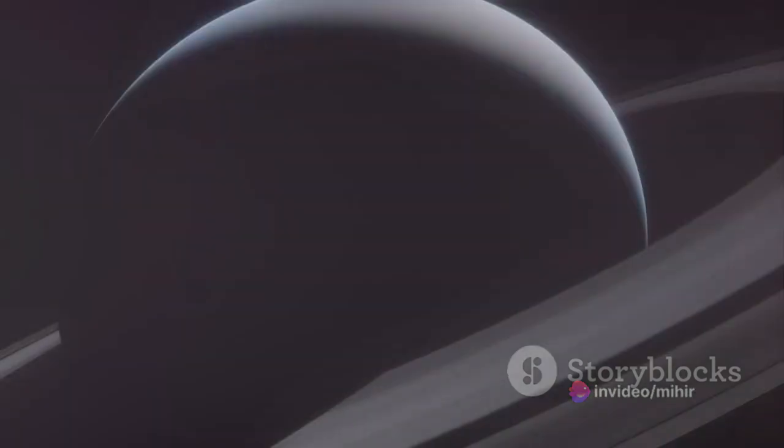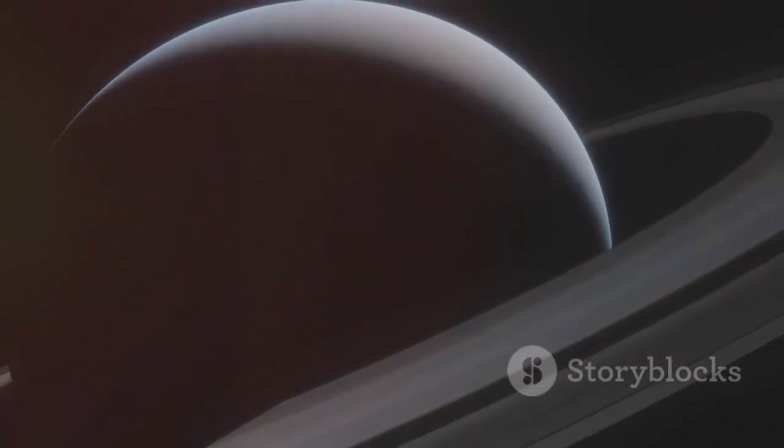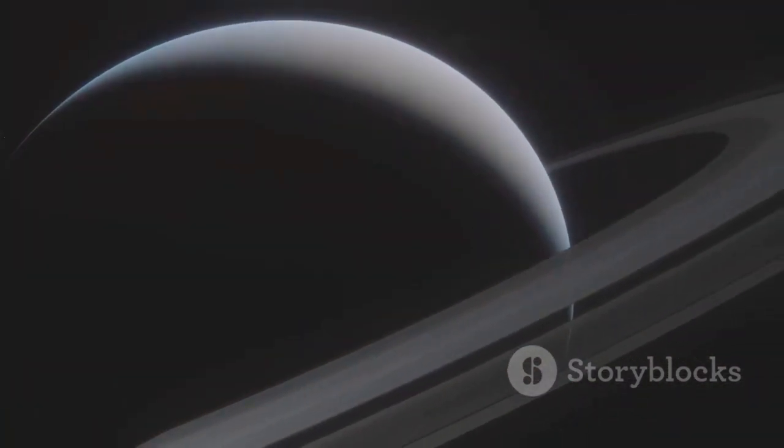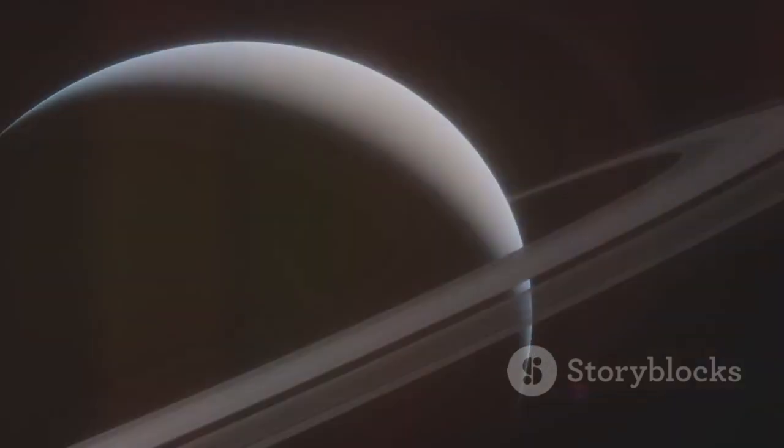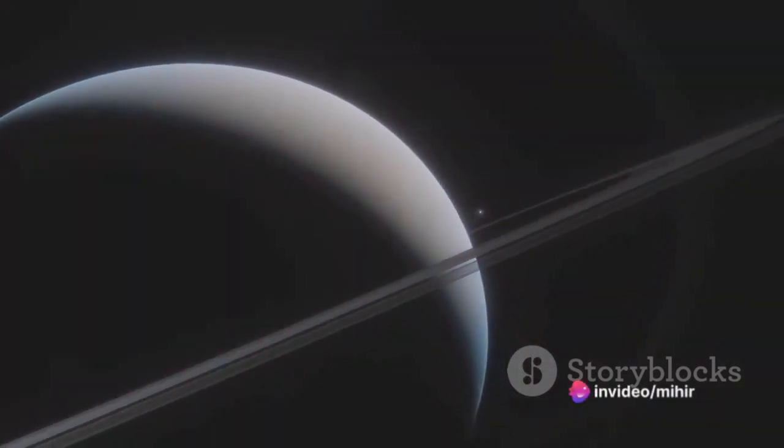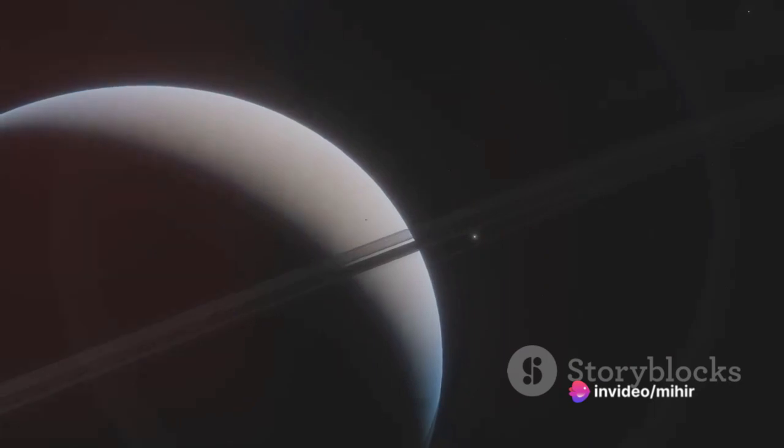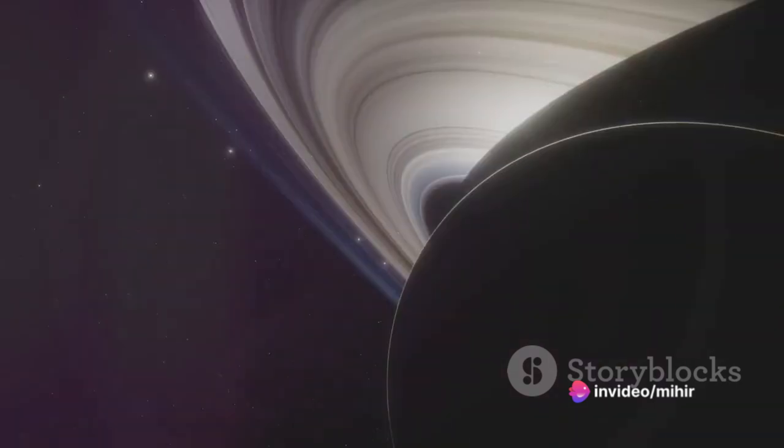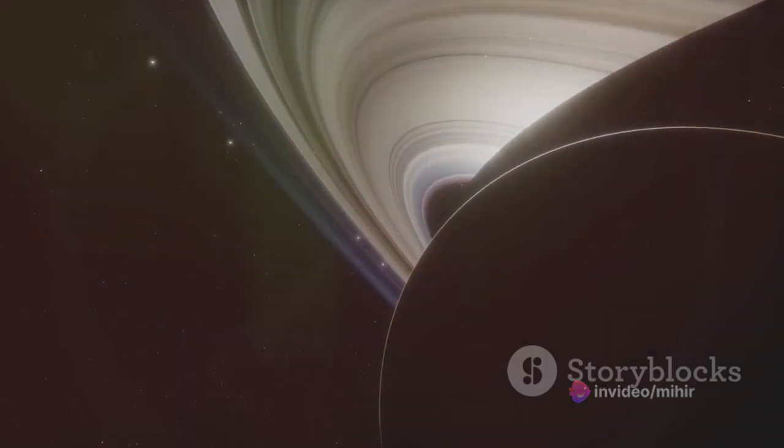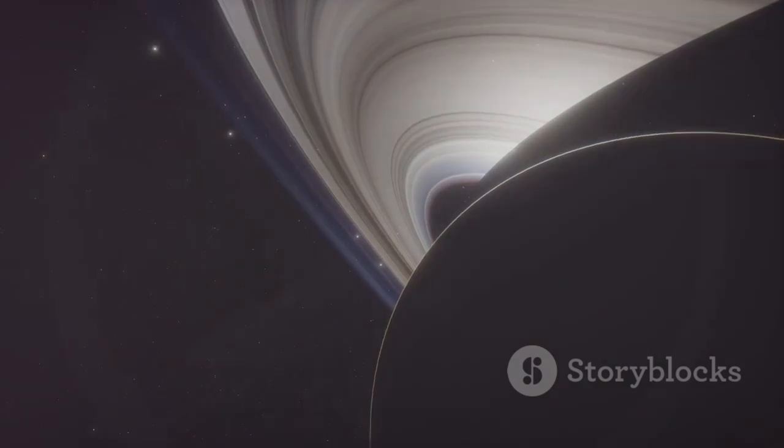Jupiter, the first of the gas giants, is the largest planet in our solar system, over 11 times the diameter of Earth. It's a world dominated by swirling clouds of gas and storms larger than our home planet. The most famous of these, the great red spot, is a storm that has been raging on Jupiter for at least three centuries. This tempest is so large that three Earths could fit within its boundaries.